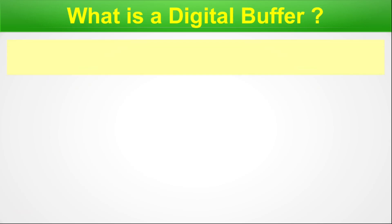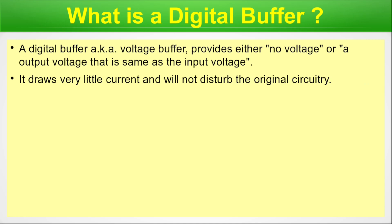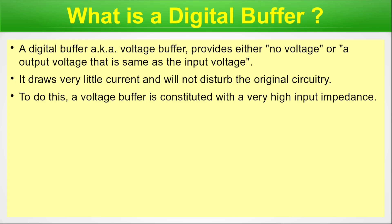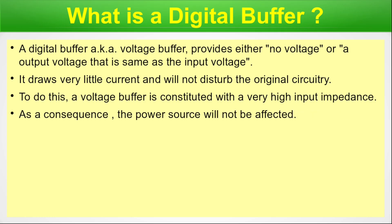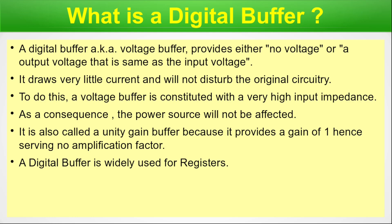What is a digital buffer? A digital buffer, also known as a voltage buffer, provides either no voltage or an output voltage that is the same as the input voltage. It draws very little current and will not disturb the original circuitry. To do this, the voltage buffer is constituted with a high input impedance. As a consequence, the power source will not be affected. It is also called a unity gain buffer because it provides a gain of one, hence serving no amplification factor. A digital buffer is widely used in processors.